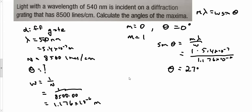When m is 2, I'm going to repeat this process. 2 times 5.4 times 10 to the minus 7, all over 1.176 times 10 to the minus 6. And when I inverse sine that, I'm going to get 67 degrees.